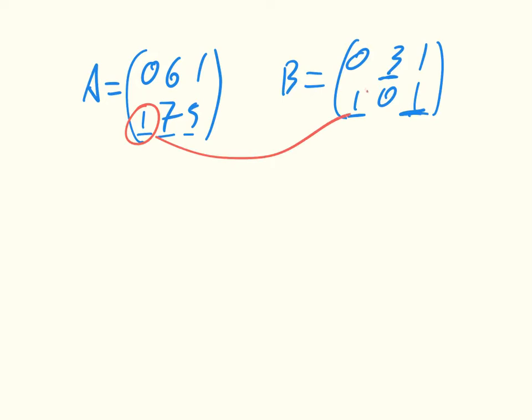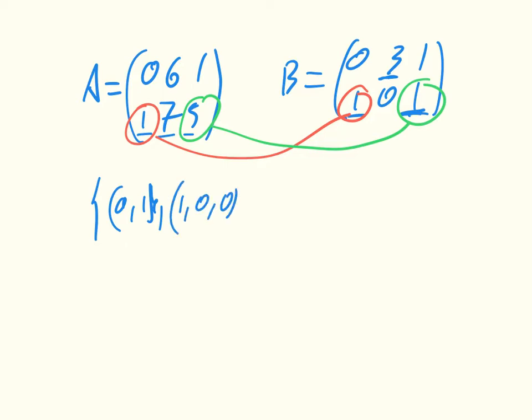We have this one and we have this one, which we can write down as (0,1), (0,1) and (1,0), (0,1).